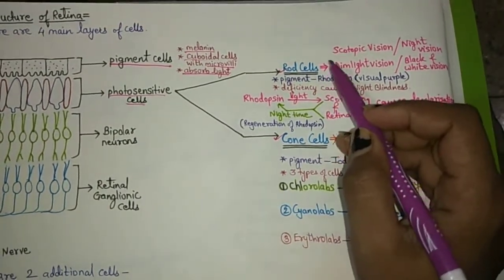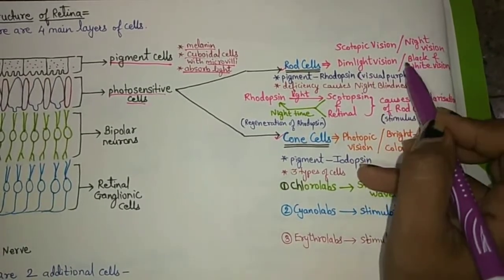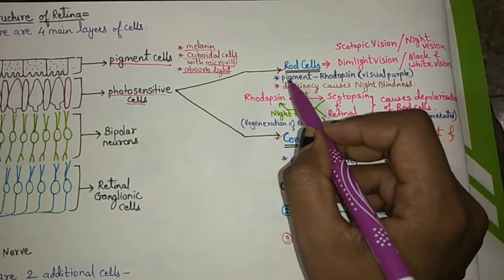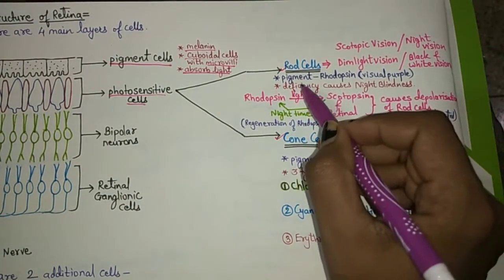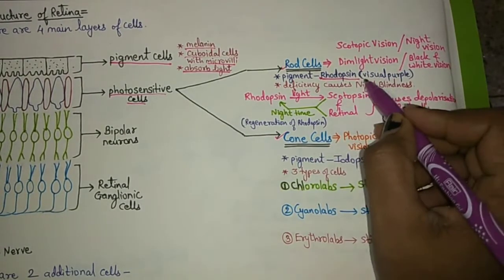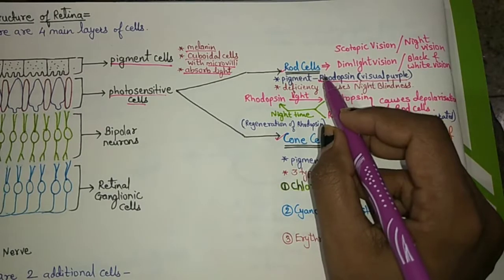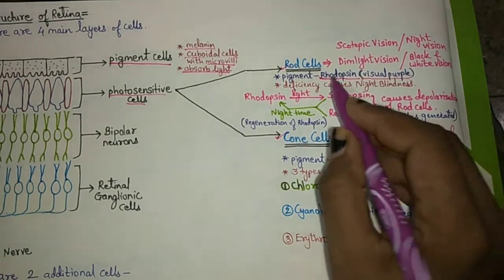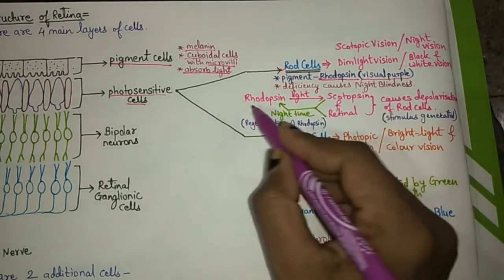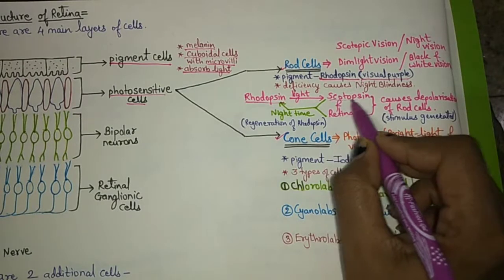Rod cells are responsible for scotopic vision — that is, night vision or dim light vision — and also for black and white vision. The pigment in rod cells is called rhodopsin, also known as visual purple. Deficiency of rhodopsin causes night blindness, because this pigment helps us see in dim light.